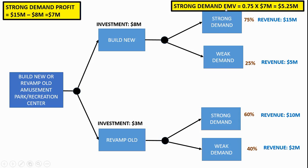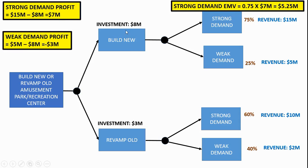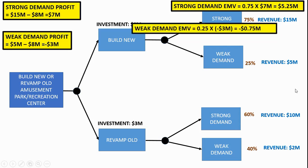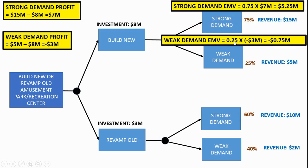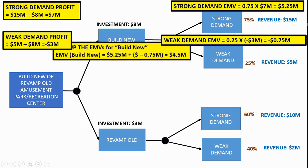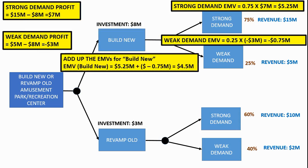Now we need to find the EMV for the weak demand. We do the same thing — subtract the investment from the revenue and we get minus $3 million. Then we multiply the probability of 25%, which is 0.25, times minus 3, and we get minus $0.75 million. Then we add the strong and weak demand numbers together, and that will be our total EMV for the build new branch. If you do that, you come up with a $4.5 million EMV. So that's the EMV for build new.